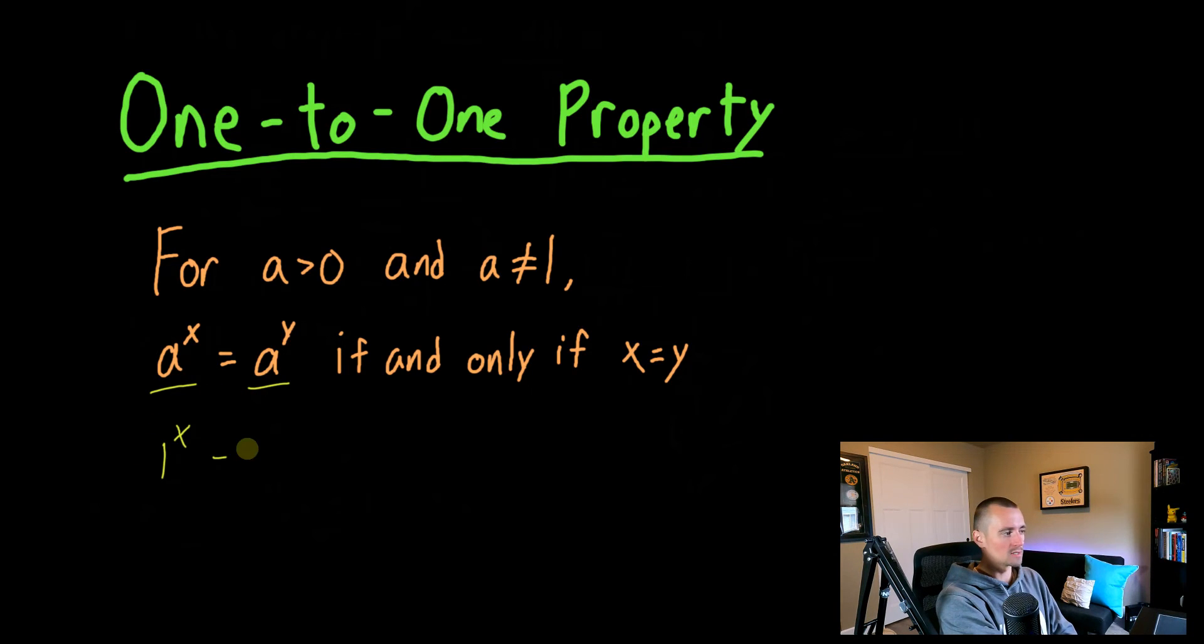So if it's like one to the x equals one to the y, that doesn't work. The one-to-one property does not apply here because anything to the first power is one. So no matter what your x and y are, this is going to be true. But as long as that base is not one and a positive number, so do keep in mind it has to be a positive number base, three to the x for example, three to the y, these are only going to be equal if x equals y.